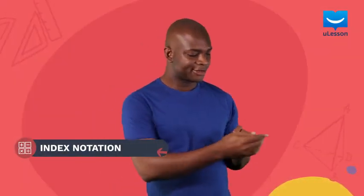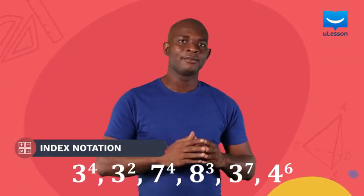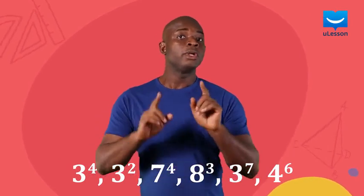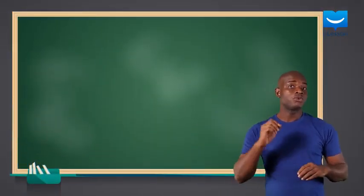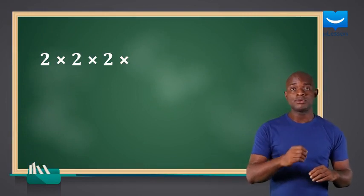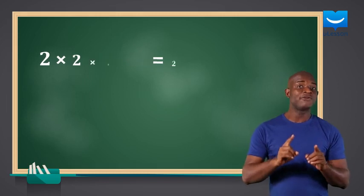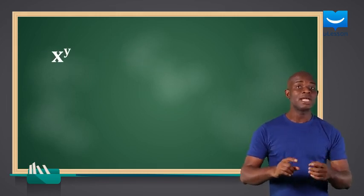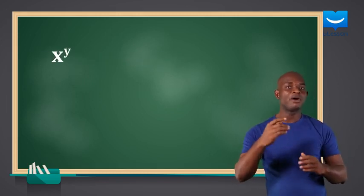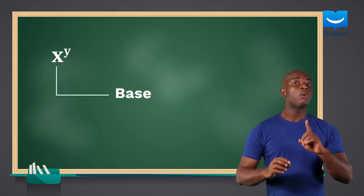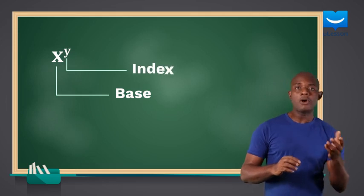When you see numbers like these, what comes to your mind? This is what we refer to as the index form. Recall that 2 times 2 times 2 times 2 can be expressed as 2 to the power of 4. The index form is a way of writing numbers as one number to the power of another number. The number is called the base while the power is the index or exponent.